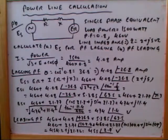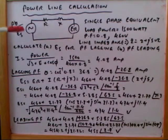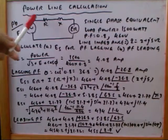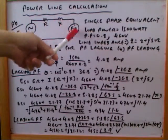So this is power line calculation. This is the generalization: body Es and the line impedance is R and X, and load impedance Er.